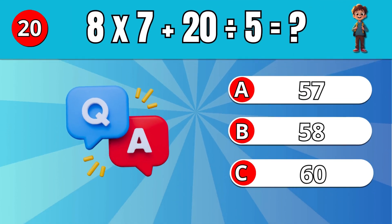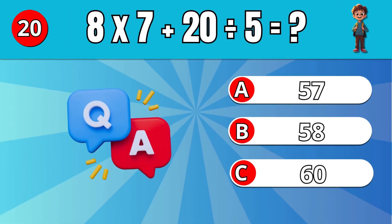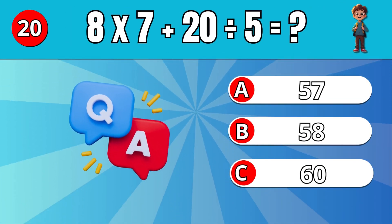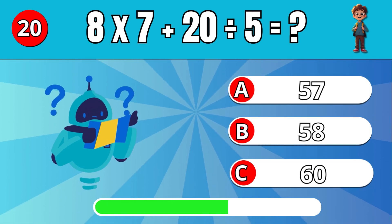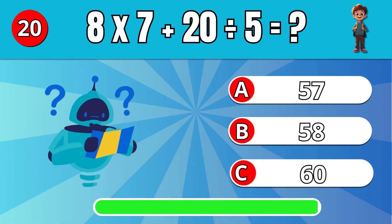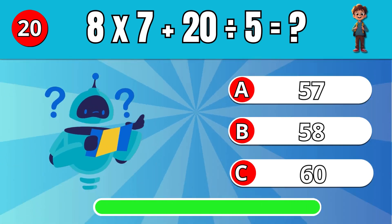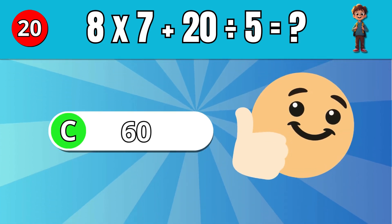What is 8 times 7 plus 20 divided by 5? C: 60.